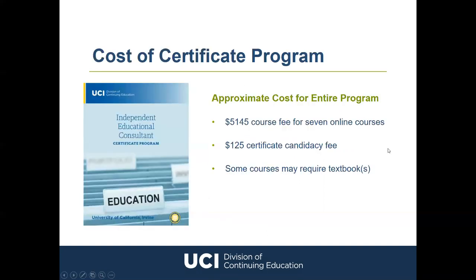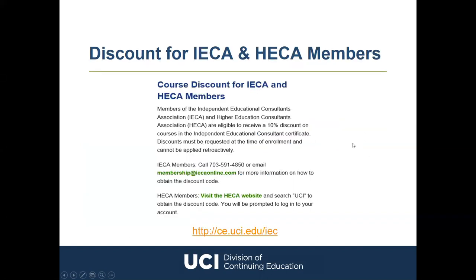Each course costs $735, so for seven courses you're looking at $5,145 total. You do not pay this upfront — you simply pay for each course individually at time of enrollment. There is also a $125 certificate candidacy fee, bringing the total to around $5,270, not including optional textbooks. We also provide discounts for members of HECA and IECA — members of these associations receive a 10% discount on courses within our Independent Educational Consultant program.